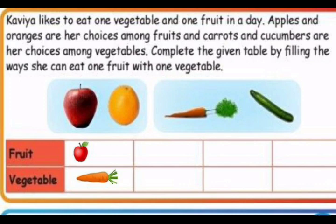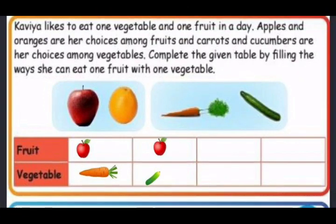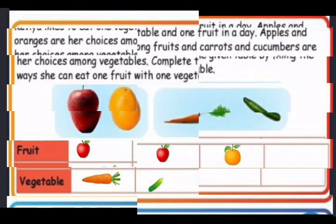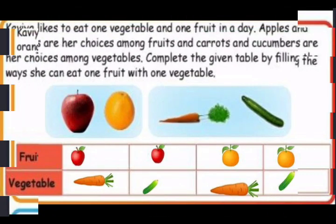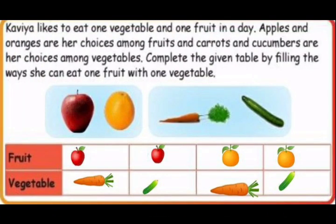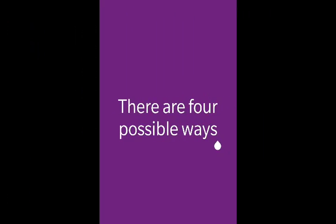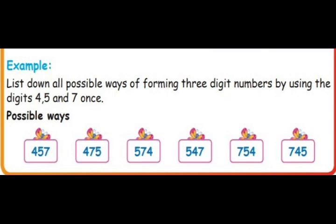First let us choose apple as the fruit. She can have apple and carrot, or apple and cucumber. Then changing the fruit to orange: orange and carrot, or orange and cucumber. So there are four possible ways: apple and carrot, apple and cucumber, orange and carrot, or orange and cucumber.